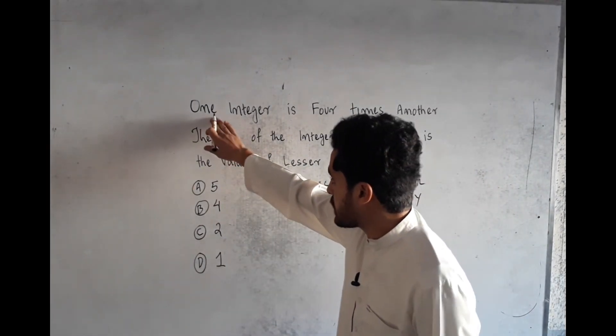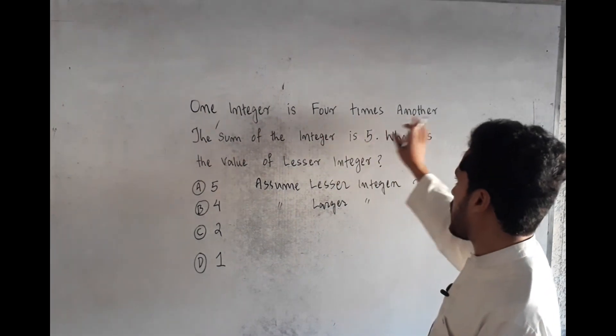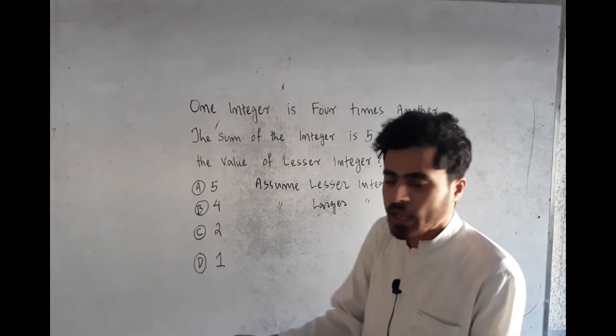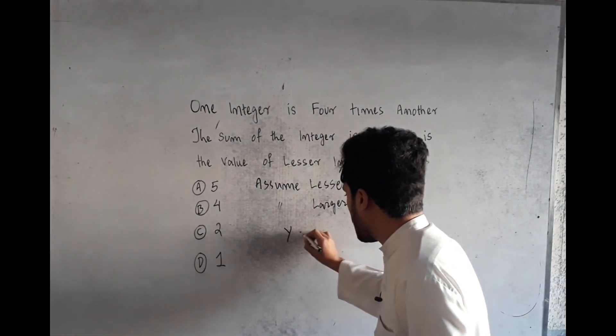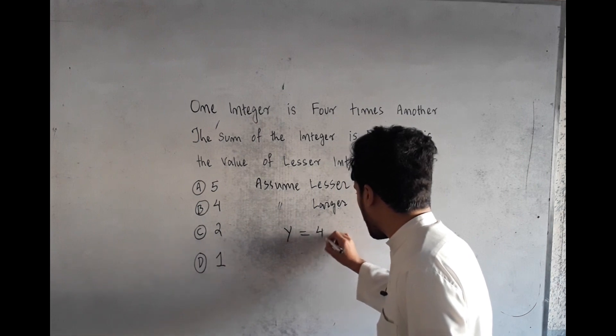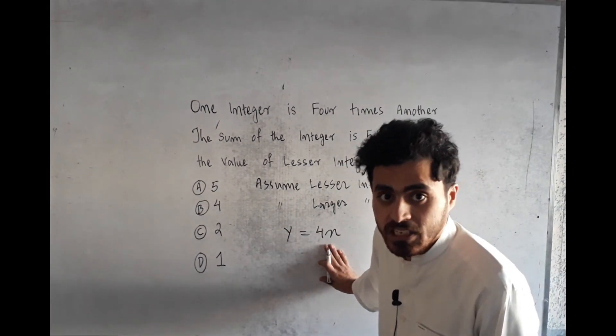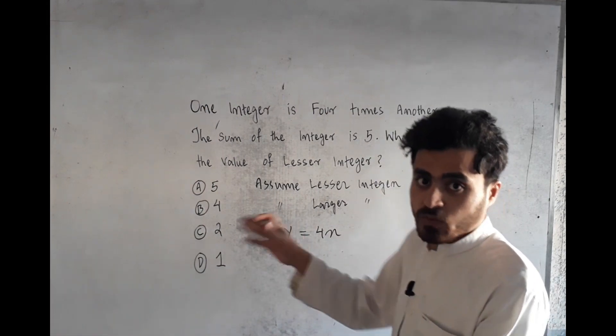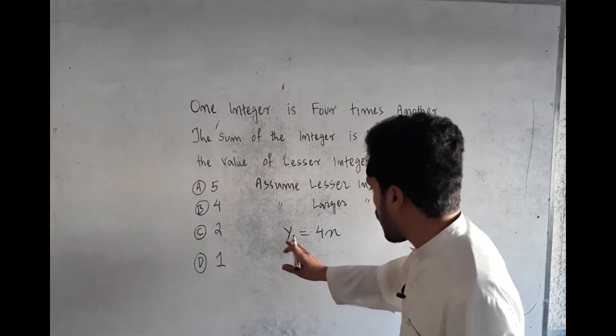The first condition is one integer is four times another. This means y equals 4x. Here x is the lesser integer, so if x is multiplied by 4, that would equal y.